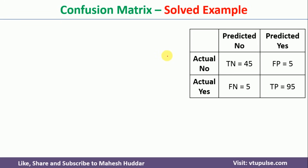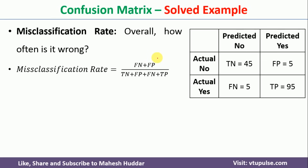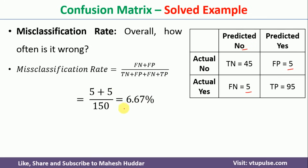The next performance metric is the misclassification rate — how often the classification was done wrong. That is total misclassifications divided by total number of examples. These 5 examples are of type no but predicted as yes, and these 5 examples are of type yes but predicted as no. That is FN plus FP divided by total, which is 10 divided by 150, equivalent to 6.67%.